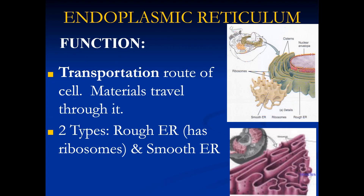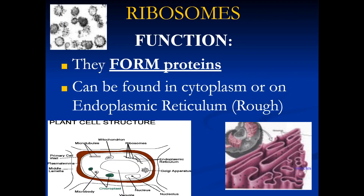The endoplasmic reticulum is the transportation route of the cell — materials travel through it, such as proteins. There are two types of endoplasmic reticulum: rough and smooth. Ribosomes form proteins and can be found in the rough endoplasmic reticulum.